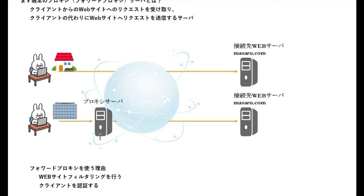ウェブサイトのフィルタリングというのは、例えば企業の中で業務上関係ないウェブサイトは見せたくないなと思ったときに、例えばギャンブルとかアダルトであったりとかショッピングとかですね、業務に関係ないサイトは見せたくないというところは、このプロキシサーバーにウェブサイトのフィルタリング機能をつけておいて、そういった通信はこのプロキシサーバーでフィルタリングして、接続先のウェブサーバーに通信できないようにするというようなフィルタリング機能を使うことがあります。